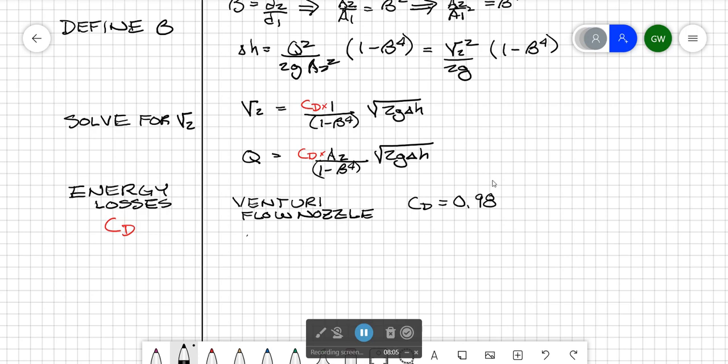If we have an orifice, very inefficient at contracting flow, so our cd value drops to about 0.60. These values remain pretty constant as long as you've got high velocity, relatively large pipes, and low viscosity fluid.